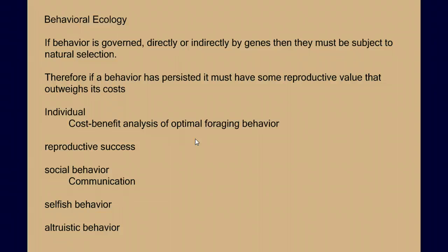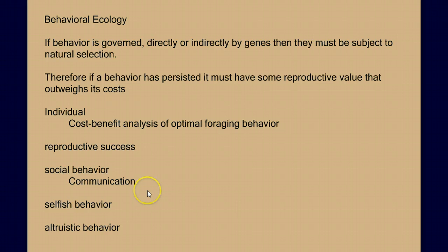If we understand that some behavior is governed directly or indirectly by genes, then we know those behaviors are subject to natural selection. So if a behavior has persisted or become more prevalent, it must have some adaptive value — some evolutionary value that outweighs its cost. As we look through these topics on behavior, we'll look at the individual benefit of those behaviors in a cost-benefit analysis, for example in optimal foraging, reproductive success, social behaviors, and the difference between selfish and altruistic behaviors.